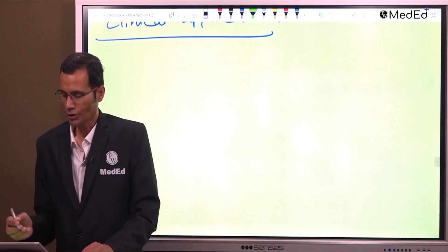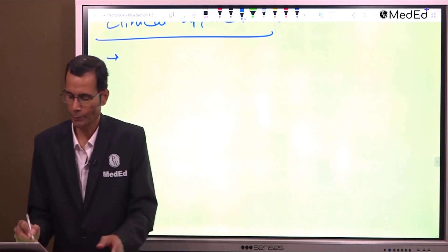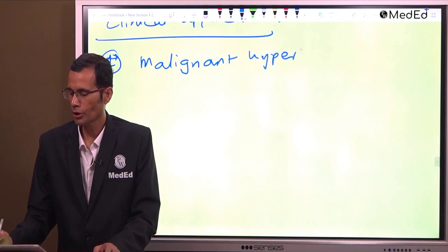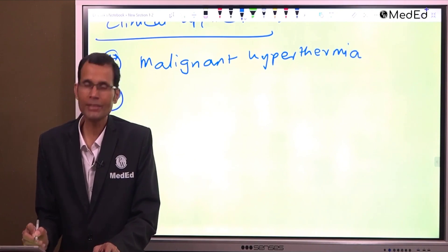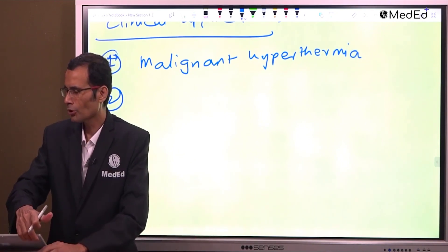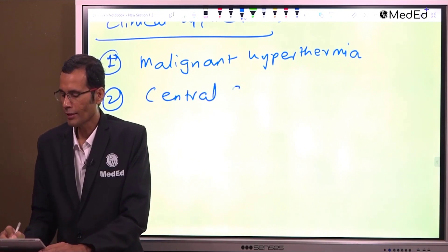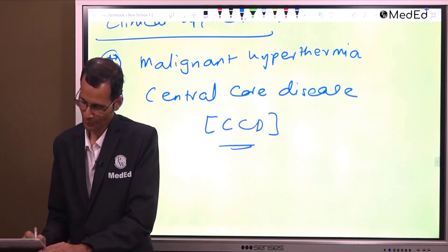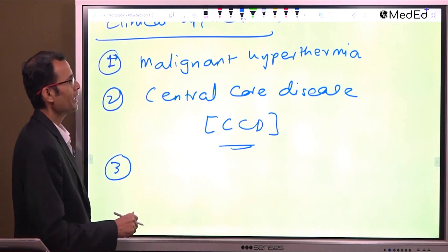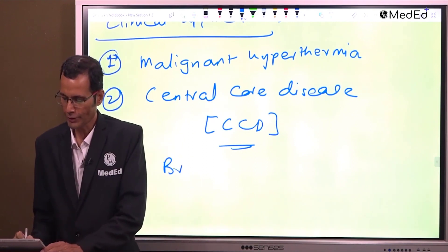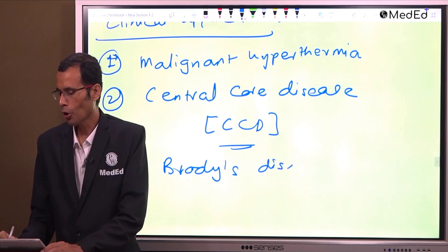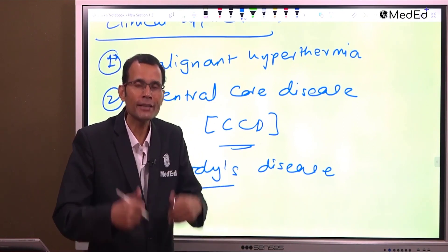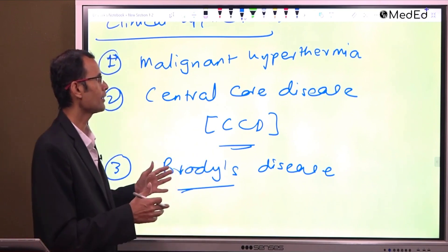For clinical application, there are three diseases related to excitation-contraction coupling: malignant hyperthermia, central core disease (CCD), and Brody's disease. Defective excitation-contraction coupling results in these diseases.